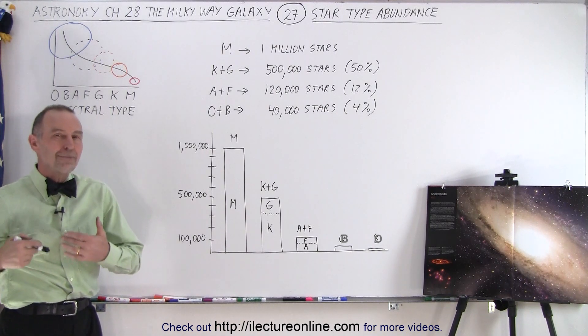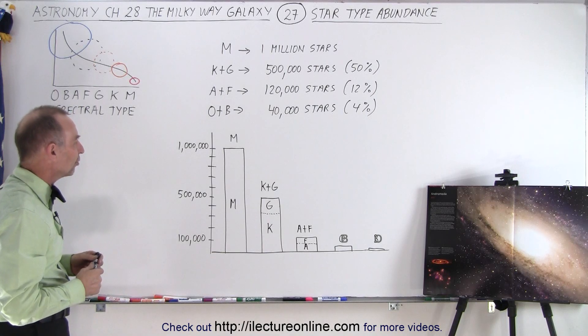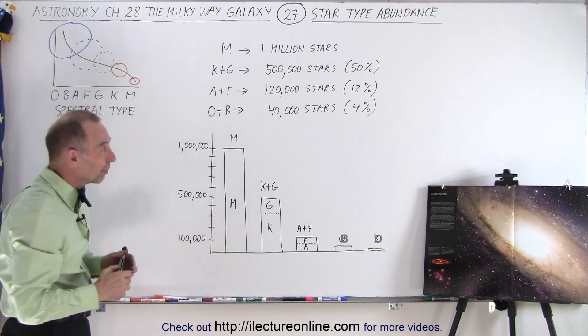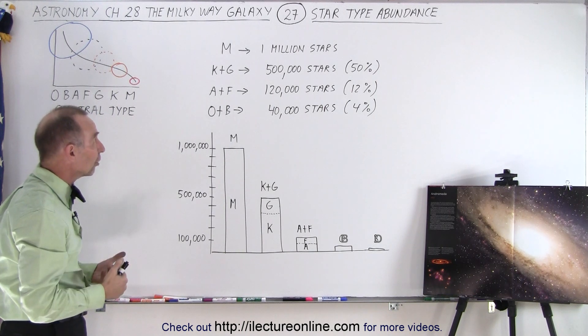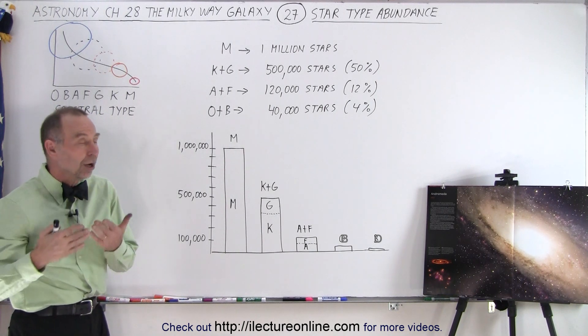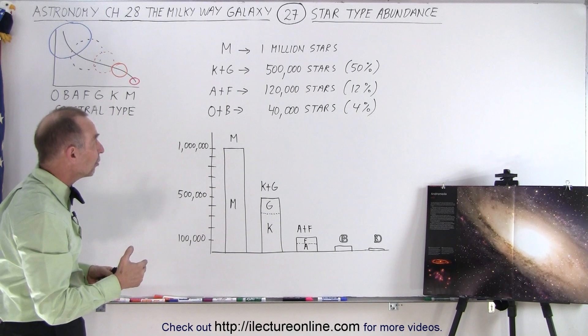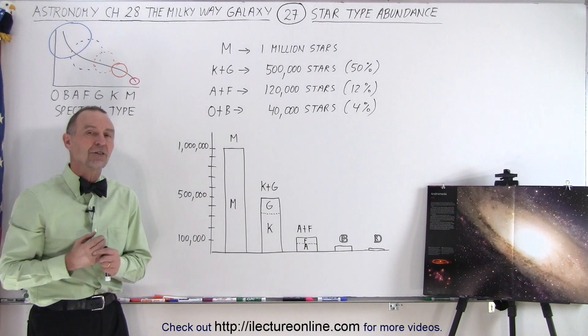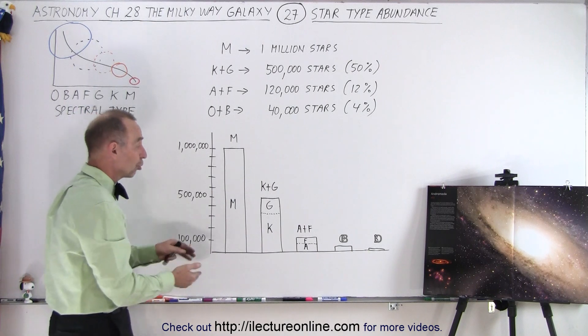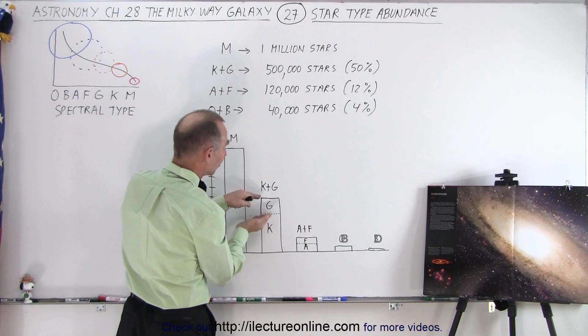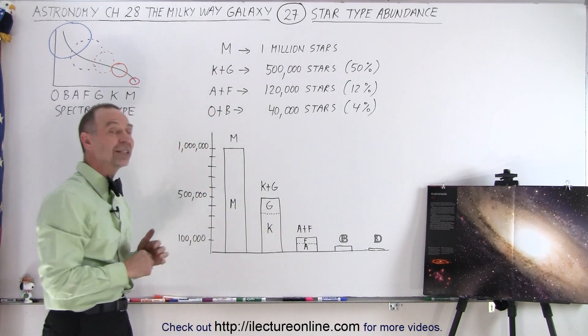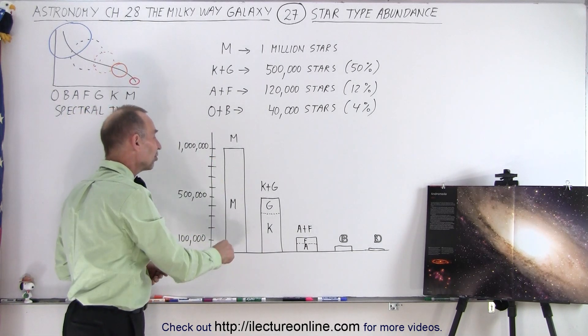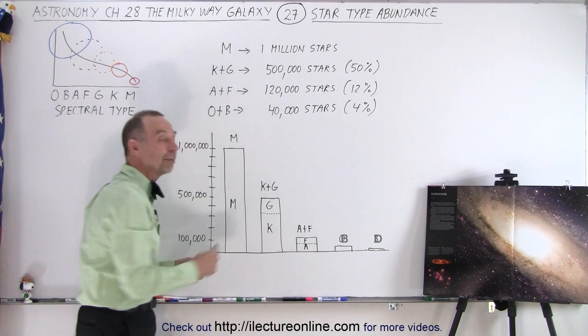Well, let's say that we have a million M-type stars. Turns out these types of stars, the little small red stars on the main sequence, are the most abundant stars. If we have a million of those types of stars, then there's about half a million of K and G-type stars combined. Of course, the majority of those are K-type stars, and a small amount are G-type stars. So you can see that there's more M-type stars than all the other types of stars combined.